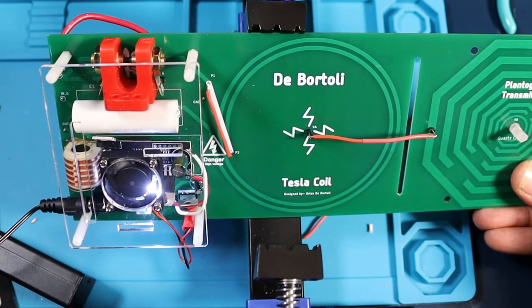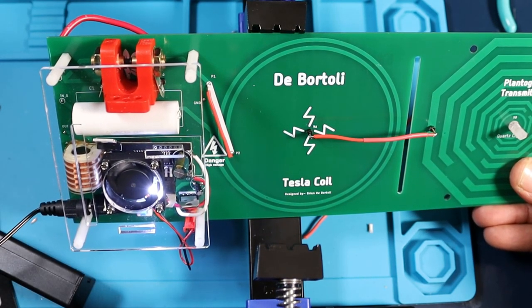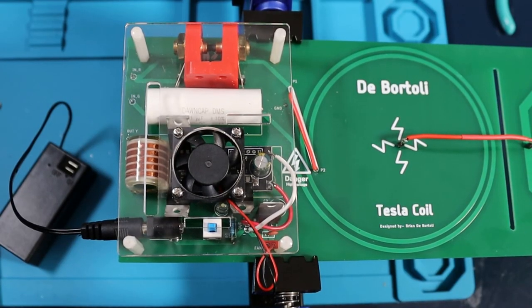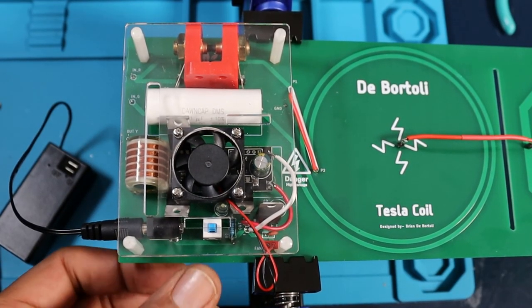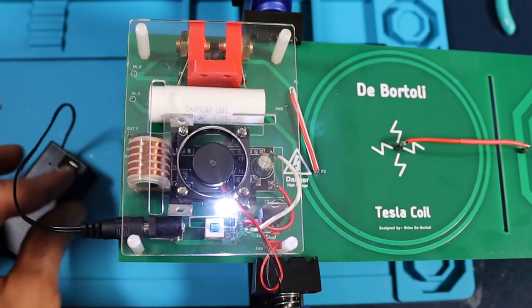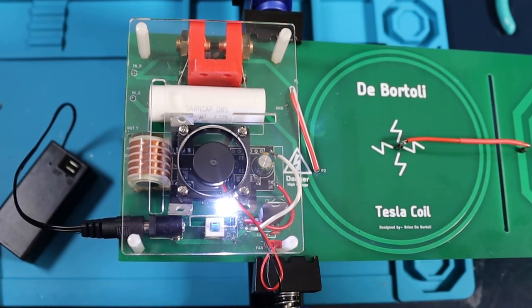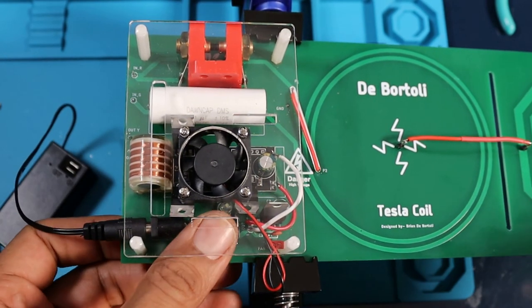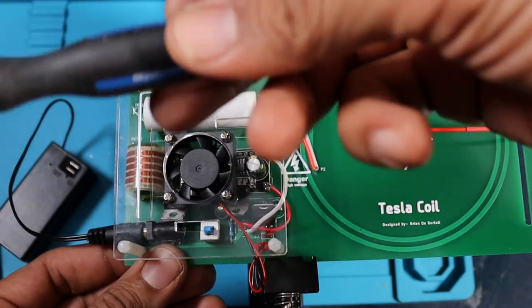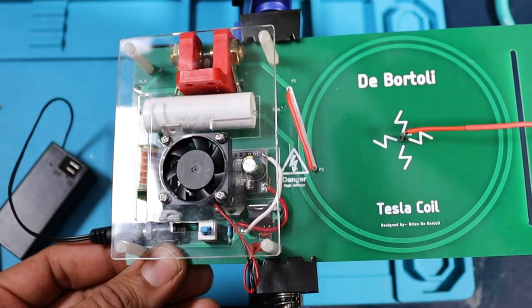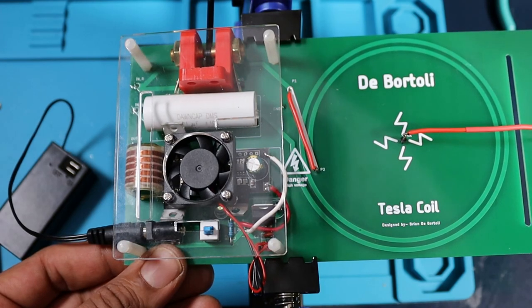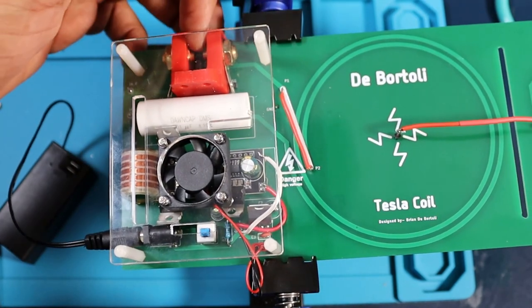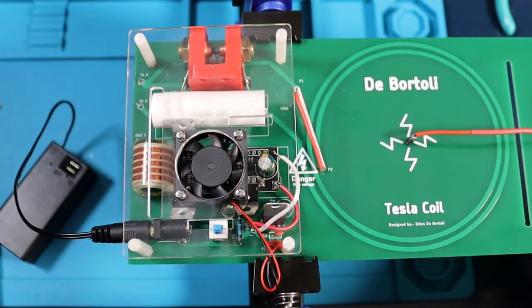And that is it ladies and gentlemen, hope you enjoyed. Tips and tricks. And for safe handling, every time you're done using your Debertoli Tesla coil, be sure to shut her off and discharge it. Use any tool you like right here. And that's it, safe to handle from this point on. Thank you.